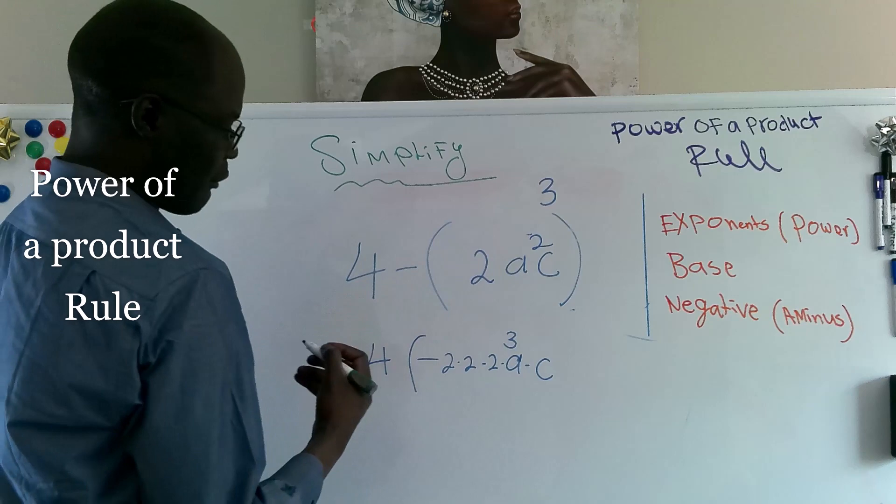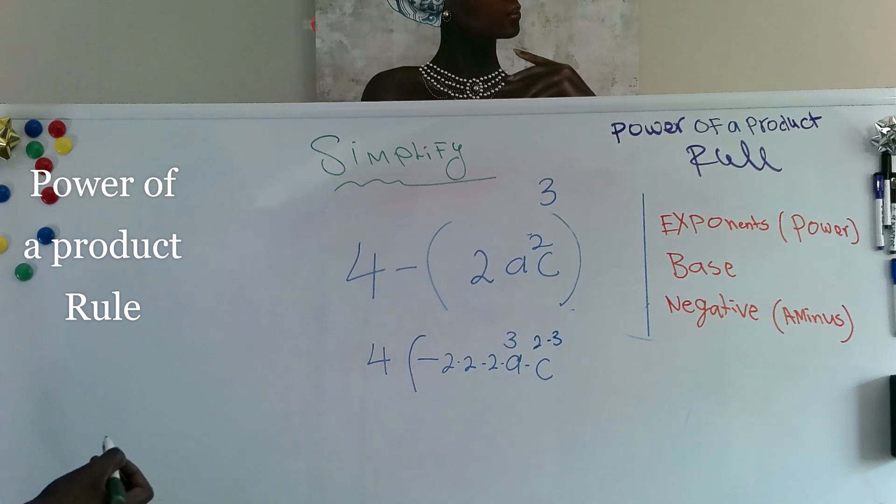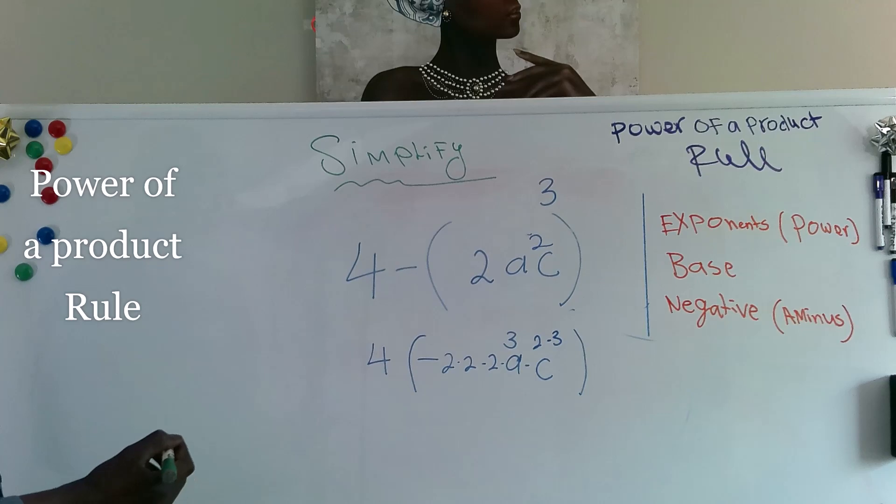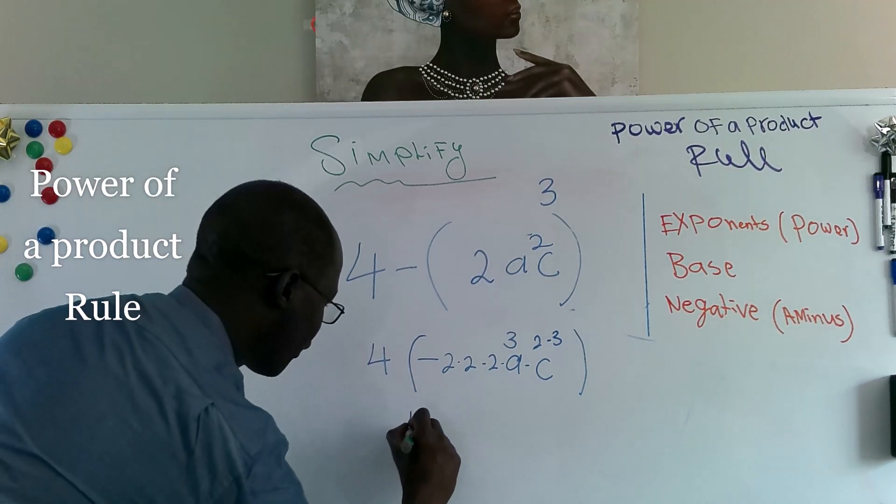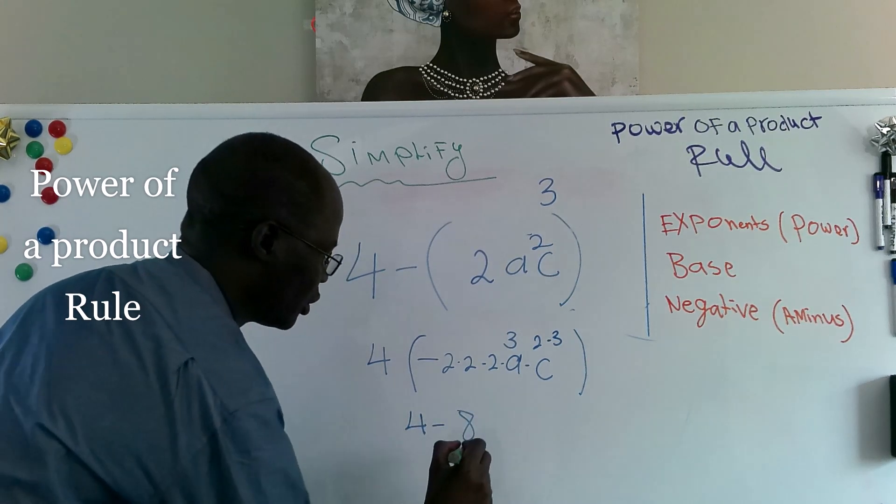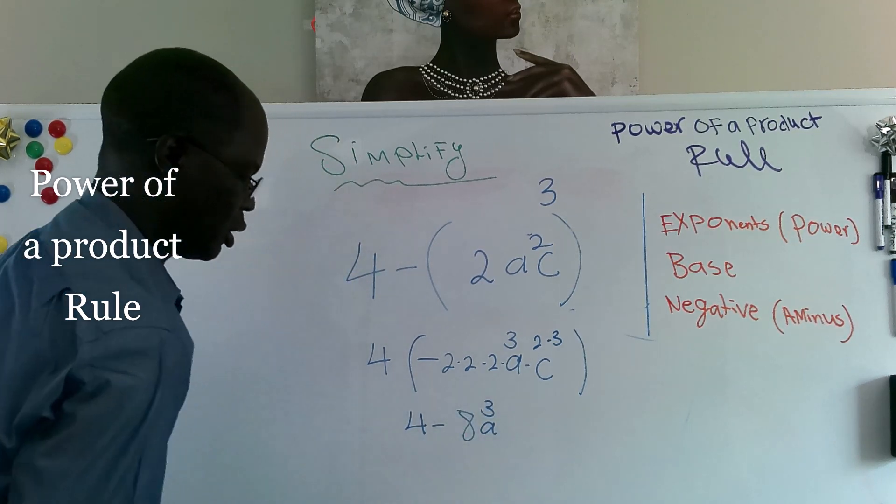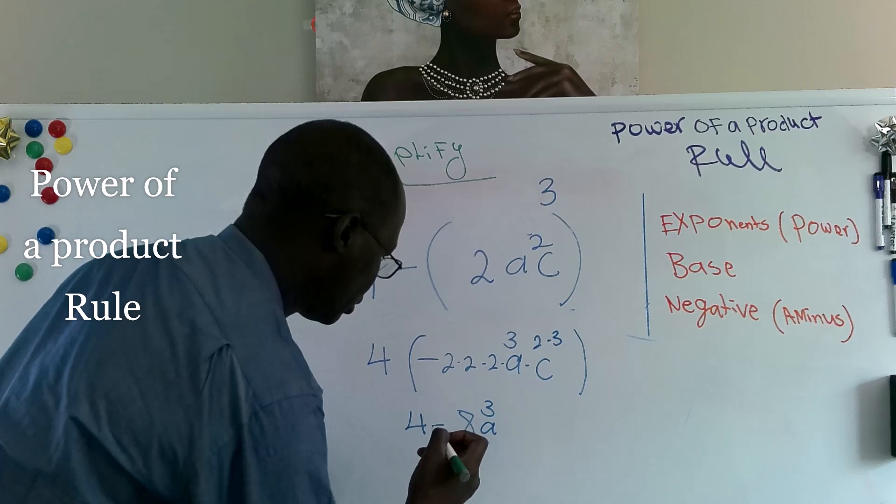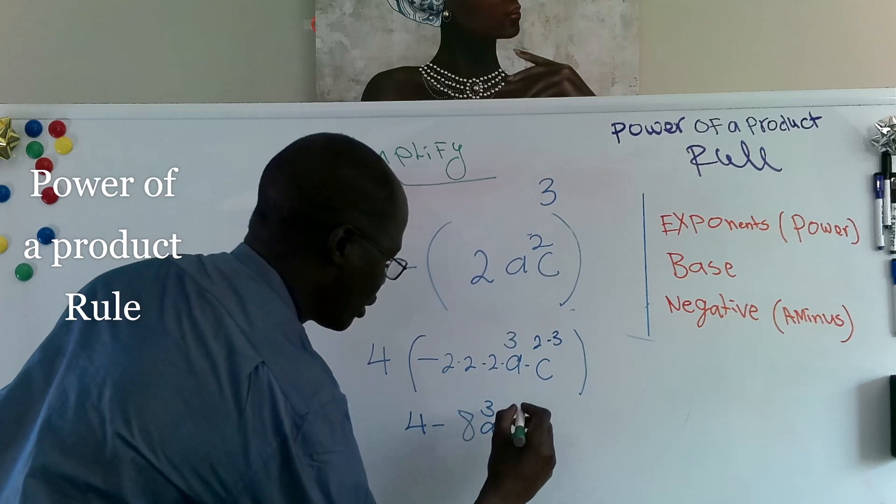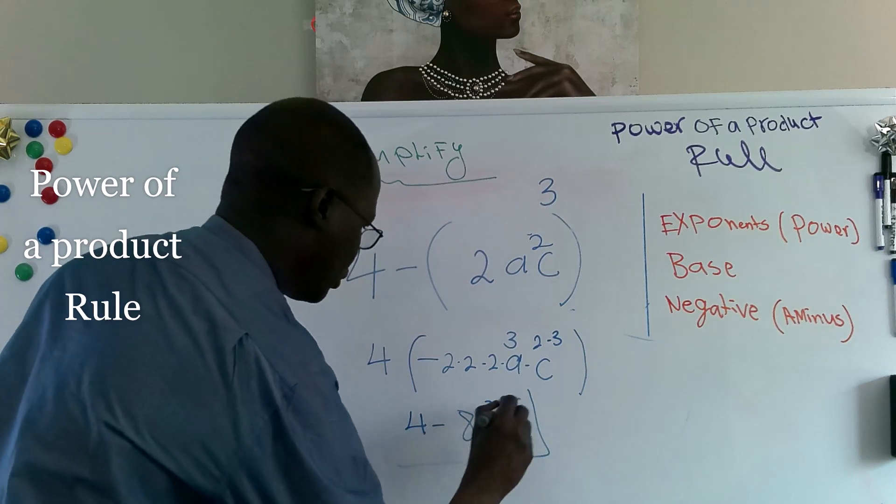And we have times c here. The only thing we have, the only thing be affected here, it be 2 times 3. That means we will have 6. That means we still have 4 minus 8, 8 times c to 3 power or to 3 power, and times c to 6 power. And that's answer we have.